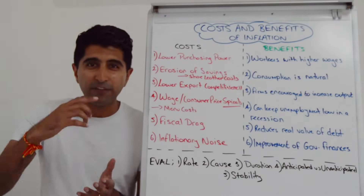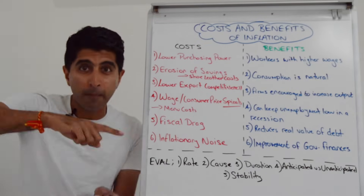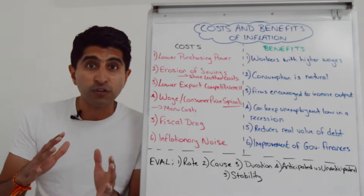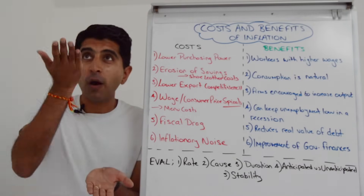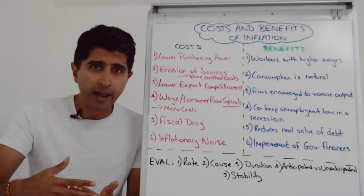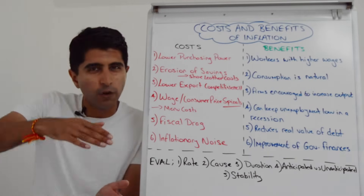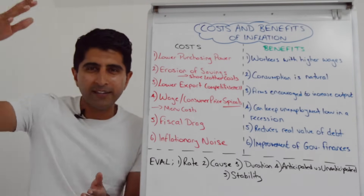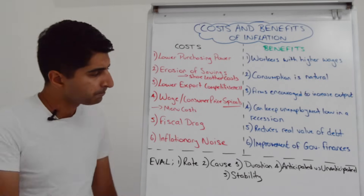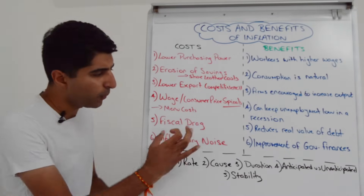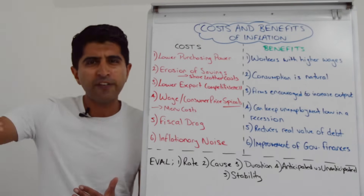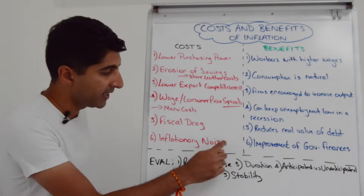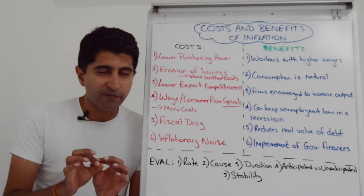Note that fiscal drag only applies if tax bands don't rise in line with inflation. Then there's inflationary noise: when the inflation rate is volatile — rising, plateauing, rising again — the price signaling function of market forces loses its value. Normally high prices signal a shortage and low prices a surplus, but when inflation is volatile, people lose understanding of what price changes mean. This creates uncertainty, causing consumers to delay spending and firms to postpone investment, harming economic growth.